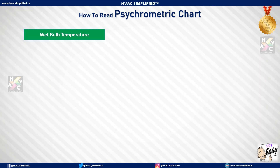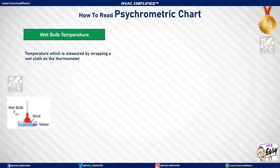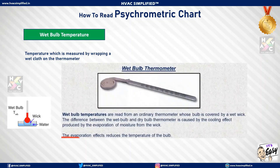Wet bulb temperature is the temperature measured by wrapping a wet cloth on a thermometer. Wet bulb temperature is read from an ordinary thermometer whose bulb is covered by a wet wick. The difference between the wet bulb and the dry bulb temperature is caused by the cooling effect produced by the evaporation of moisture from the wet wick.